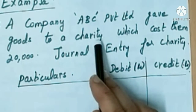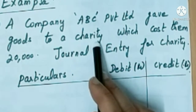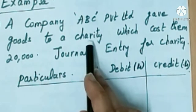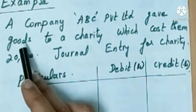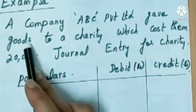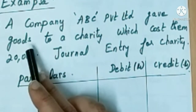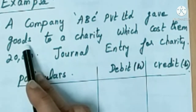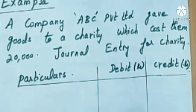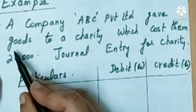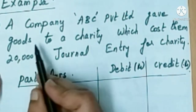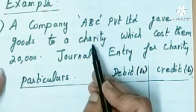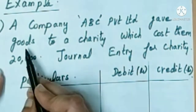So charity account is debited. Goods are given as charity, so there is a decrease in purchase of goods. Therefore, purchase account should be credited. For goods given as charity, we use the term purchases. So the entry is: charity account debited to purchases account.